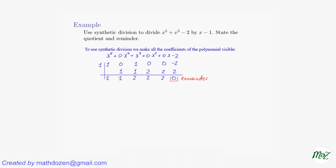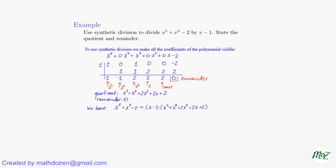So what do we have? We have that the remainder is 0 — that's good. The quotient can be decoded by the coefficients: constant term, x, x squared, x cubed, x to the fourth. So the quotient is x to the fourth plus x cubed plus 2x squared plus 2x plus 2, and the remainder is 0. Since the remainder is 0, we have that the original polynomial x to the fifth plus x cubed minus 2 is factored into (x minus 1) multiplied by (x to the fourth plus x cubed plus 2x squared plus 2x plus 2).